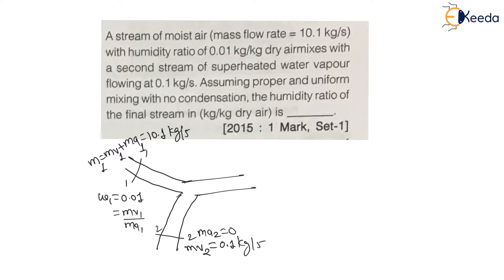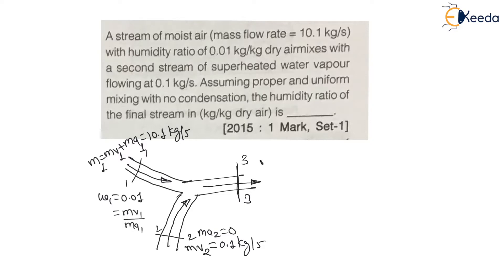Assuming proper and uniform mixing with no condensation: uniform mixing means vapor mixes into vapor and air mixes into air. No condensation means mass of vapor remains the same at the exit. Therefore mass of vapor 3 equals mass of vapor 1 plus mass of vapor 2.